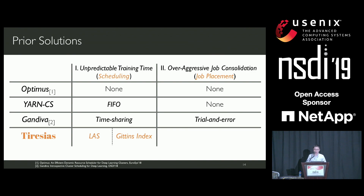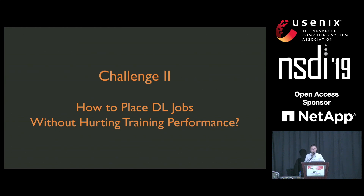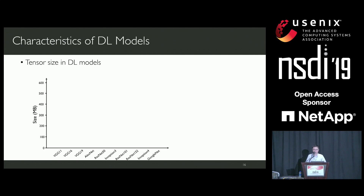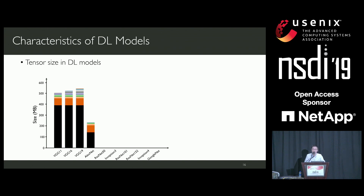Next, I will briefly introduce how our system can place deep learning jobs without hurting their training performance. Let's look at tensor sizes in deep learning models. A deep learning model consists of many tensors, and different tensors have different sizes. This figure shows the tensor size distribution in 10 popular deep learning models. Each bar represents the total model size, and the color blocks within the bar map to tensors in the model—larger blocks mean larger tensors.